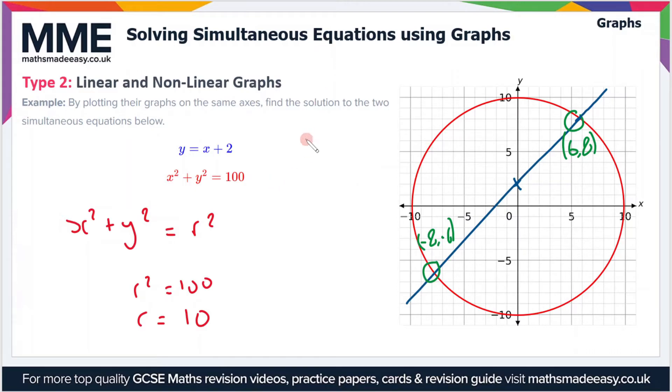So therefore our solutions to the simultaneous equations, we have two pairs of solutions. We have x = 6, y = 8, that's the first one in the top right. And then we have the bottom left one which is x = -8, y = -6. So those are our two solutions to the simultaneous equations.